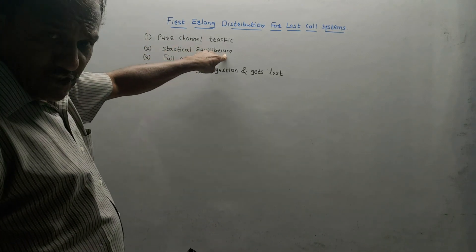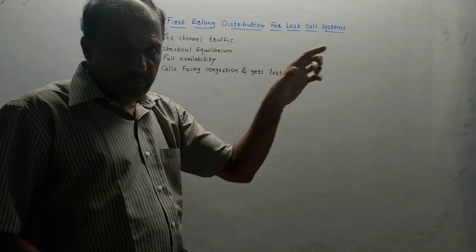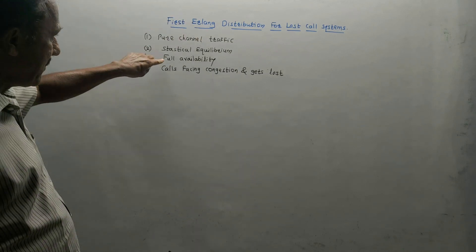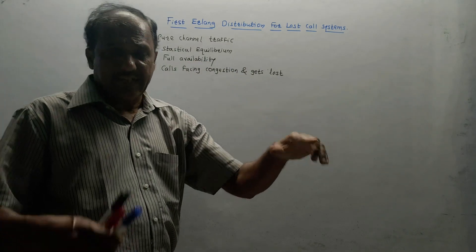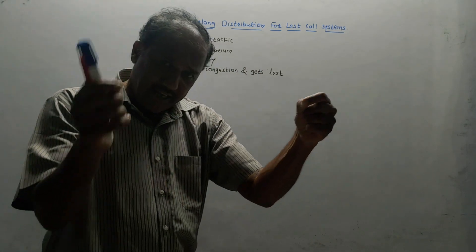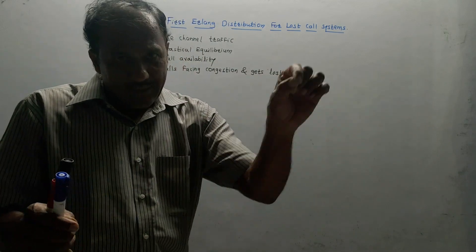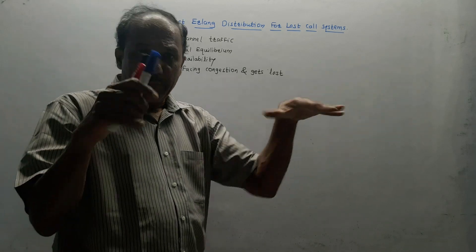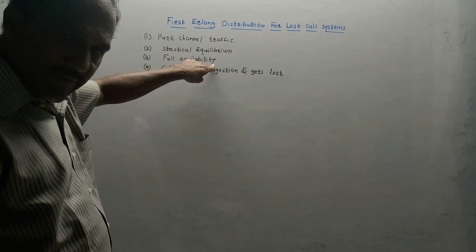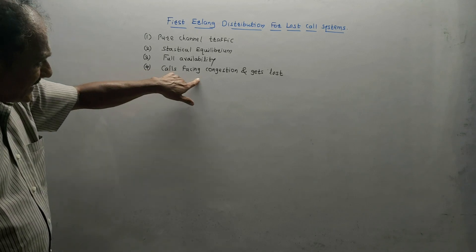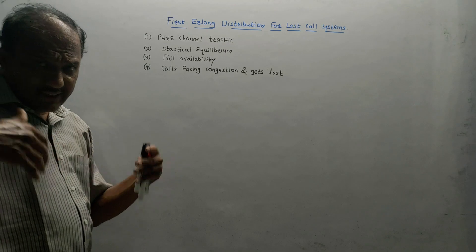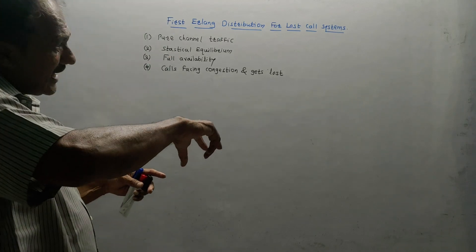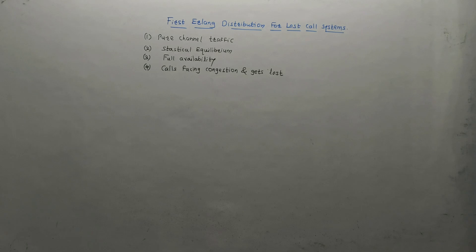The second assumption is statistical equilibrium — during a busy hour the probability of call arrivals remains almost constant. Third is full availability, indicating that every call will be completed; whenever there is an attempt to make a call, whatever available channel exists will be allocated to complete that call — though practically full availability is not always possible. Fourth, calls facing congestion get lost: whenever there is network congestion and someone tries to make a call, that call faces congestion and will not be completed — it gets lost in the system.